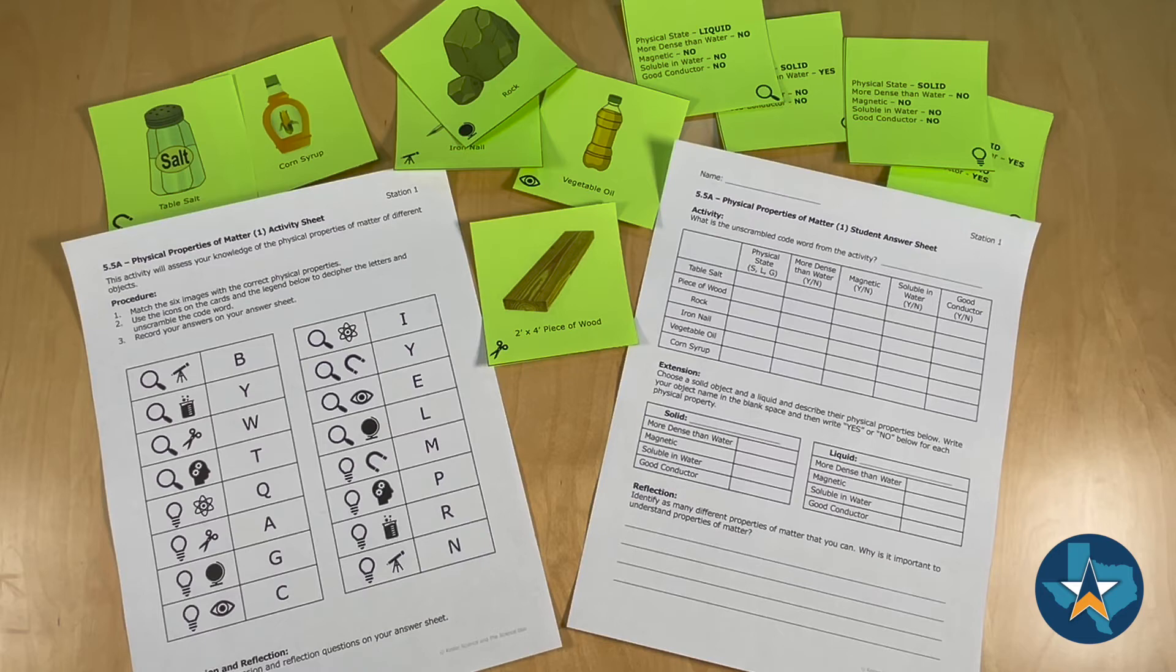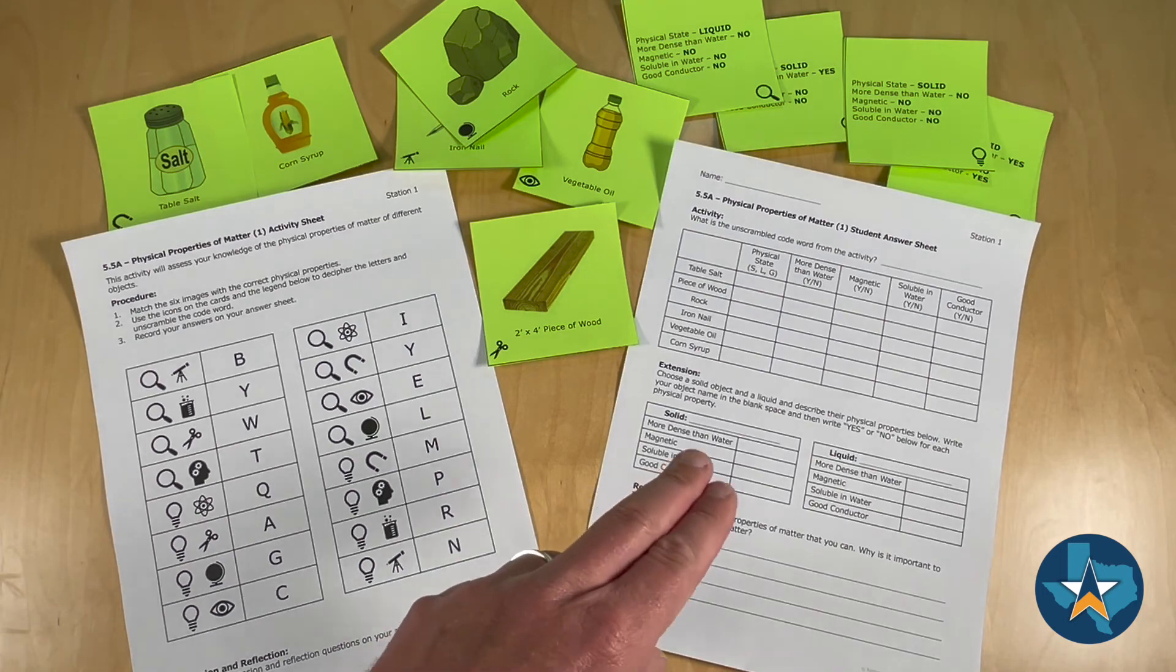On the extension portion, students will need to choose a real-world solid and liquid and determine the physical properties of each by writing a yes or no next to each of the properties on the sheet.